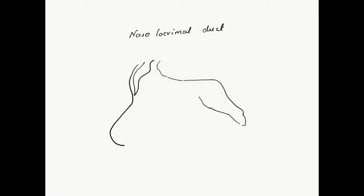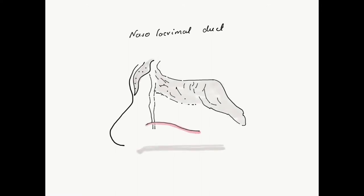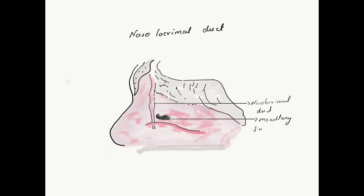In order to see the nasolacrimal duct, we need to remove all the other turbinates and expose until the lamina papyracea laterally. The nasolacrimal duct lies anterior to the maxillary sinus. It opens below the inferior turbinate, extending between the lacrimal sac above and inferiorly bounded by Hasner's valve.